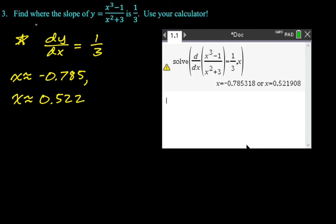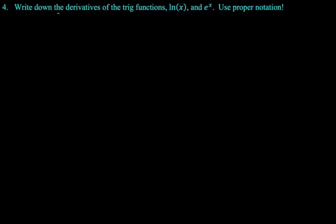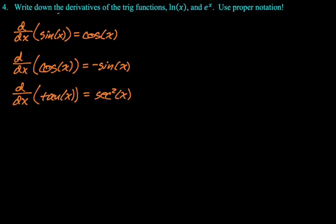Alright, next problem. Write down the derivatives of the trig functions, natural log of x and e^x use proper notation. Alright, so this is a big deal. If you don't have these memorized, calculus will be much harder for you. So I'm stressing that in this problem set. It's not really a problem so much as if you didn't do it already, go back and memorize them. So here it goes. The derivative of sine is negative cos- oh, sorry, geez, wrong right off the bat. The derivative of sine is cosine. The derivative of cosine is negative sine. The derivative of tangent is secant squared. Those are like the three fundamental ones.